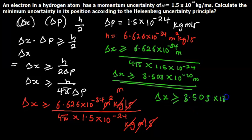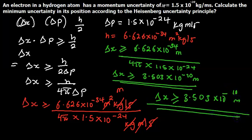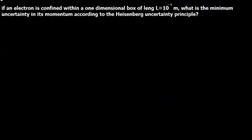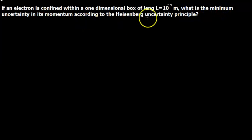And this is it for this problem. Let's look at another problem. If an electron is confined within a one-dimensional box of length 10⁻⁹ meters, what is the minimum uncertainty in its momentum according to the Heisenberg uncertainty principle?